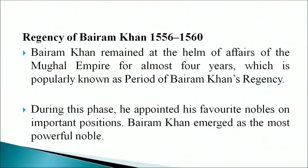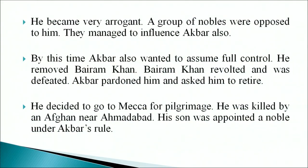Bairam Khan remained at the helm of affairs of the Mughal Empire for almost four years, a period popularly known as Bairam Khan's regency. During this phase he appointed his favorite nobles to important positions and became very powerful. A group of nobles opposed to him managed to influence Akbar. By this time Akbar also wanted to assume full control. He removed Bairam Khan; Bairam Khan revolted and was defeated. Akbar pardoned him and asked him to retire. He decided to go to Mecca for pilgrimage but was killed by an Afghan near Ahmedabad. His son was appointed a noble under Akbar.